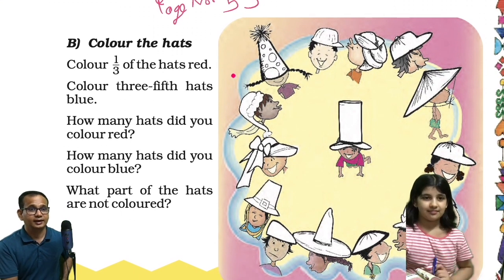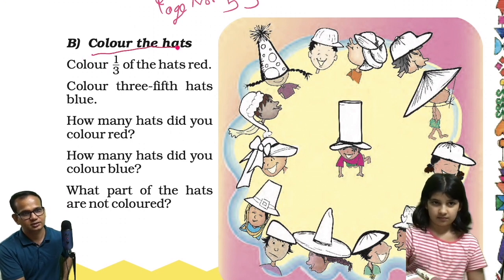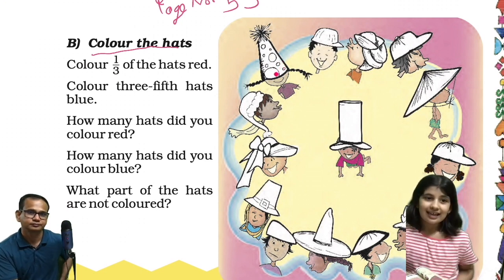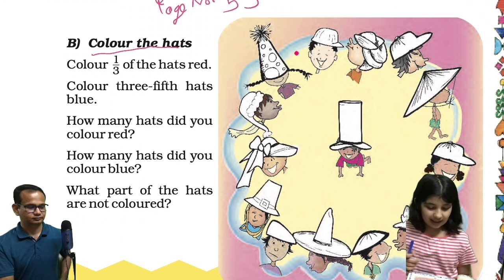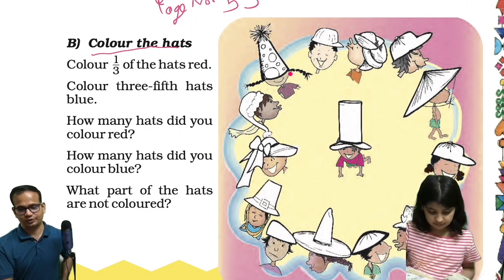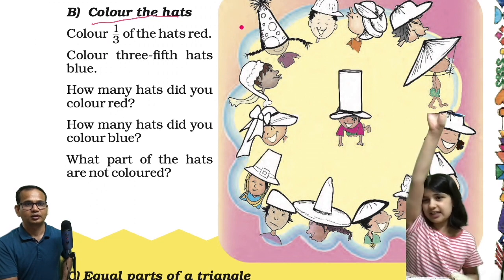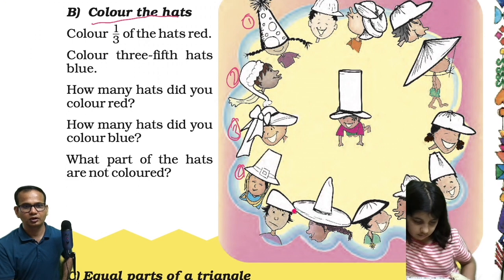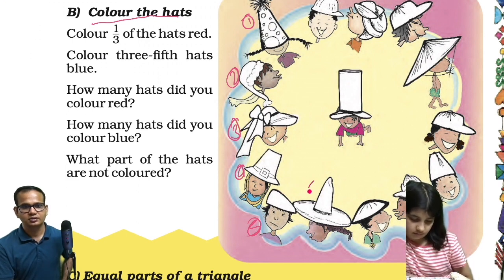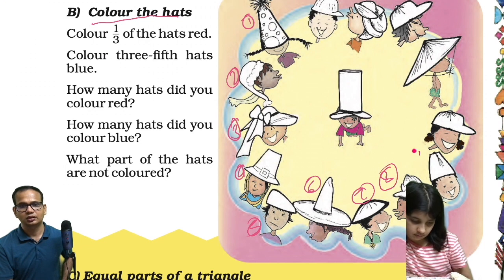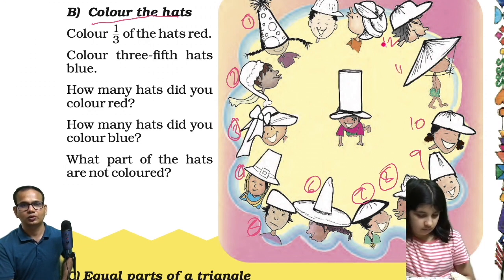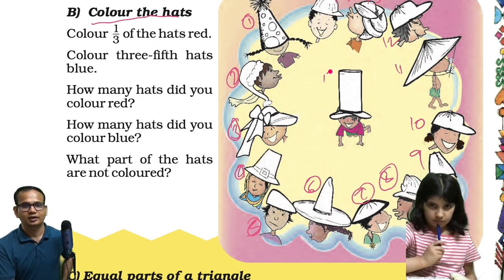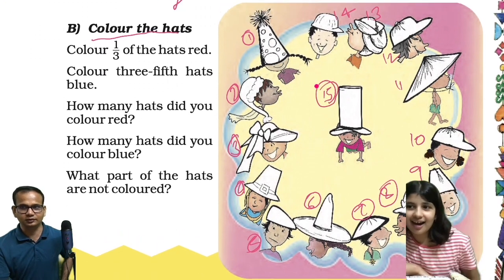Let's go next. Color the hats. Color 1 by 3 of the hats red. What do you think? How many hats are there? Count them. 1, 2, 3, 4, 5, 6, 7, 8, 9, 10, 11, 12, 13, 14 — and then these are 15. I forgot the center one. Okay, fine.